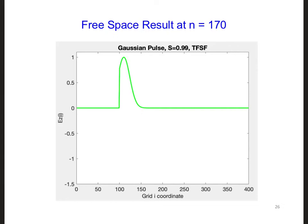During the simulation for the first 100 time steps or so, we won't see anything in the primary grid. The wave will only be propagating across the incident grid.